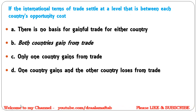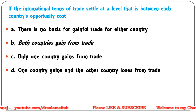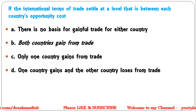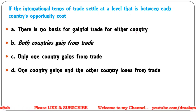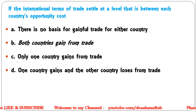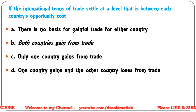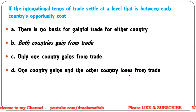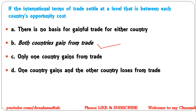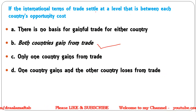Next: If international terms of trade settle at a level between each country's opportunity cost, there is — no basis for gainful trade for either country; both countries gain from trade; only one country gains from trade; one country gains and the other loses. Correct answer: both countries will gain if terms of trade settle at a level between each country's opportunity cost.